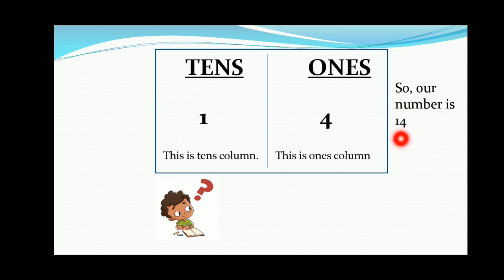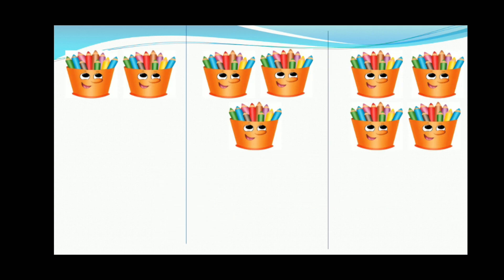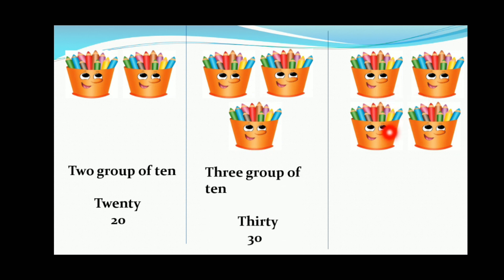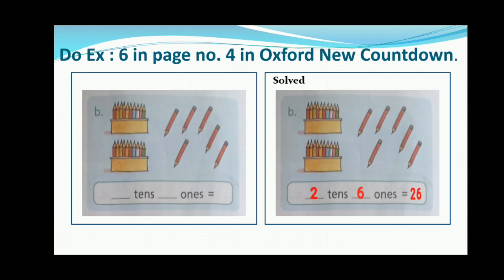Remember: 1 ten is equal to 10 ones. Here you can see 2 groups of tens means 20, and 3 groups of tens means 30, and 4 groups of tens means 40. Now take out your book and open page number 4 and do Exercise 6.